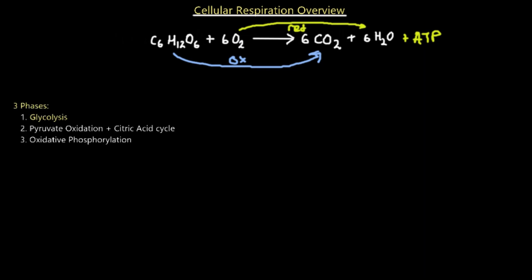Cellular respiration occurs in three different phases. The first is glycolysis, which we'll cover in detail today. Following that is pyruvate oxidation and the citric acid cycle. The final stage is oxidative phosphorylation, which occurs on the mitochondrial inner membrane — this is the electron transport chain that produces lots and lots of ATP.